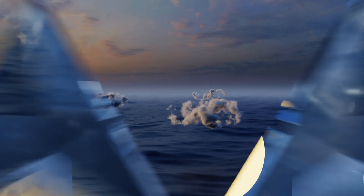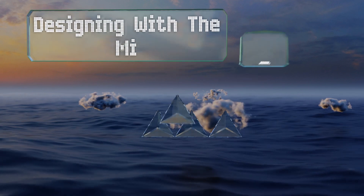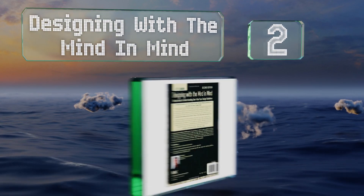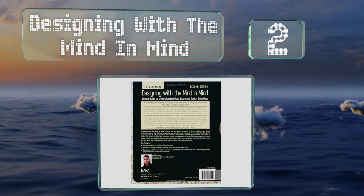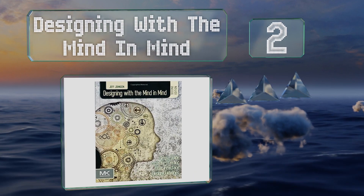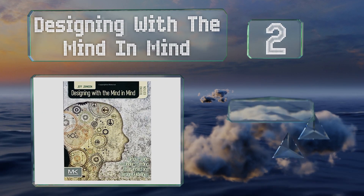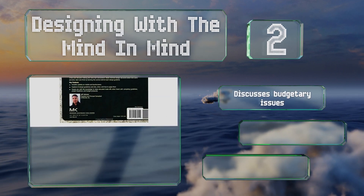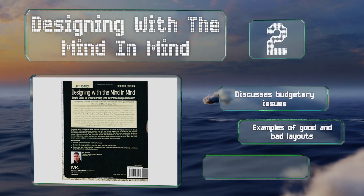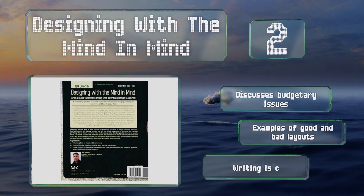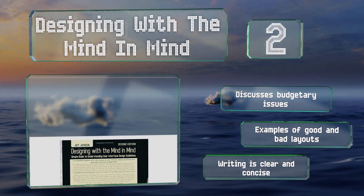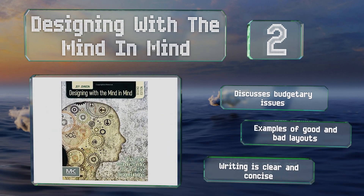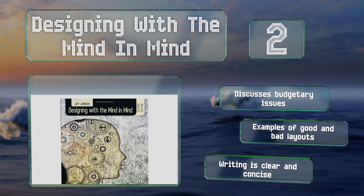At number two, for those who are curious about the science behind building user interfaces, 'Designing with the Mind in Mind' is an in-depth study of the aspects of cognitive psychology that will help you make informed decisions across a variety of media. It discusses budgetary issues and includes examples of good and bad layouts. The writing is clear and concise.